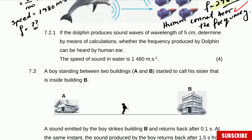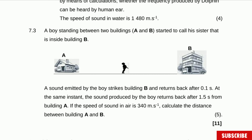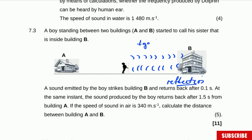Question 7.3. A boy standing between two buildings A and B starts to call his sister inside building B. A sound emitted by the boy strikes building B and returns back after 0.1 seconds. What happened here is reflection — the wave goes in one direction, bounces off the building and comes back. All of that was done in 0.1 seconds. So the time to go and come back is equal to 0.1 seconds — that is the total time.